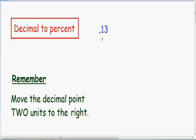In my previous video, going from percent to decimal, we moved the point two units to the left. Now, when going from decimal to percent, we just have to move the decimal point two units to the right.